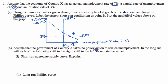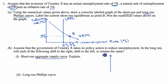Assume that the government of country X takes no policy action to reduce unemployment. In the long run, which of the following shift to the right, shift to the left, or remain the same? They're asking about the short-run aggregate supply curve. This is about aggregate supply, not the Phillips curve. So let me draw a graph — the vertical axis is the price level (PL), and the horizontal axis is real GDP. The long-run supply curve is vertical, representing full employment output for our country — that's the long-run aggregate supply.